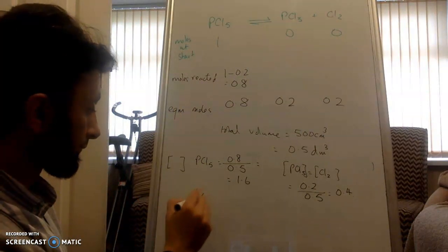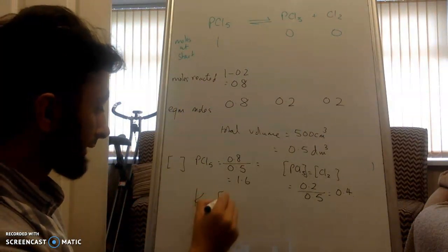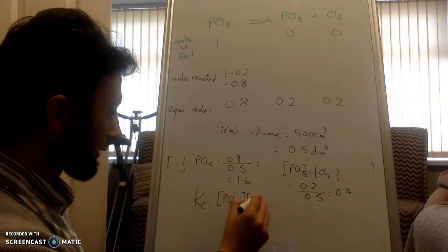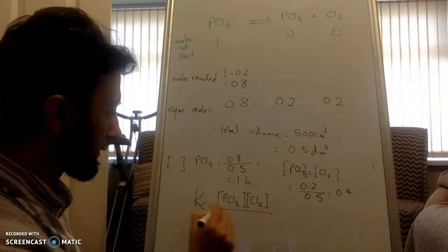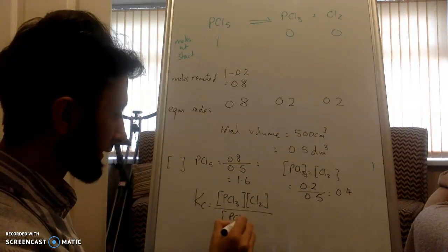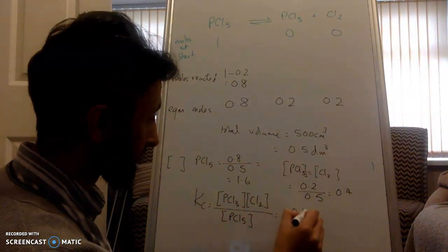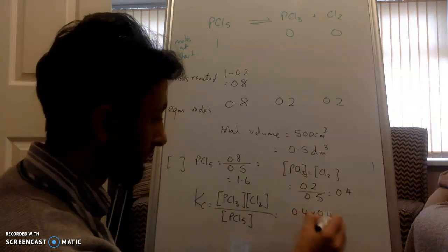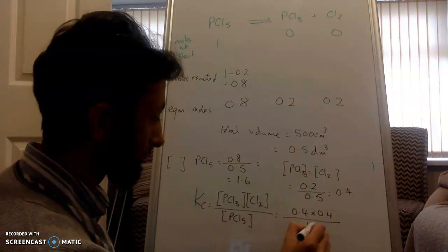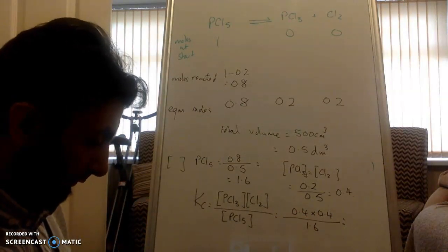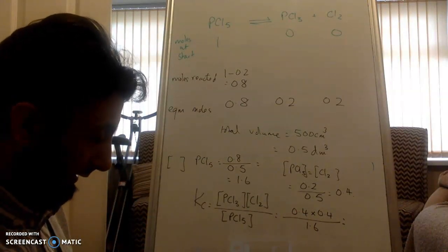Expression for Kc: square brackets of PCl3 times square brackets of Cl2 divided by PCl5. Let's substitute: 0.4 times 0.4 divided by 1.6.